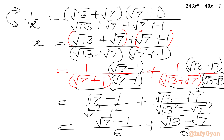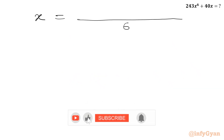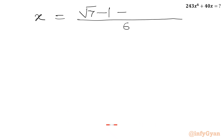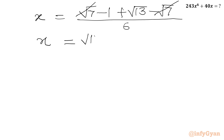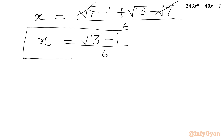So I will write x equal to, with common denominator 6: root 7 minus 1 plus root 13 minus root 7 all over 6. Now we can cancel plus root 7 and minus root 7 from the numerator. And we can write x equal to root 13 minus 1 over 6. This is the value of x.